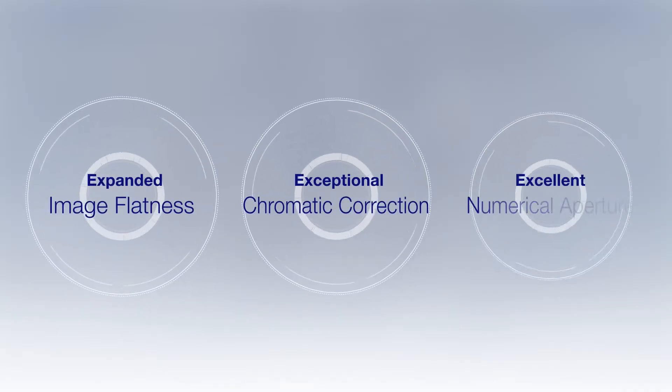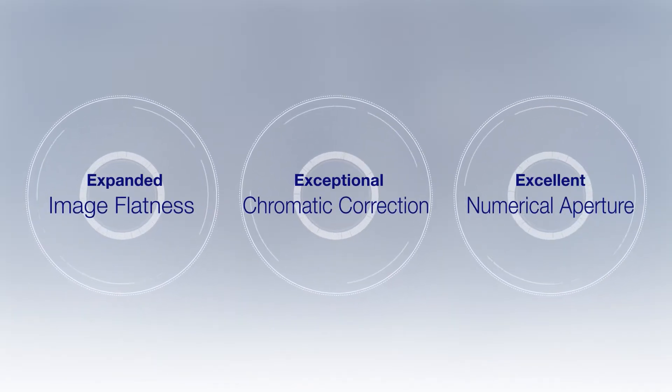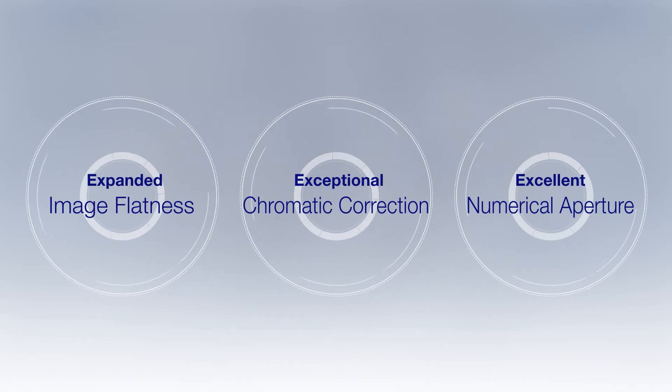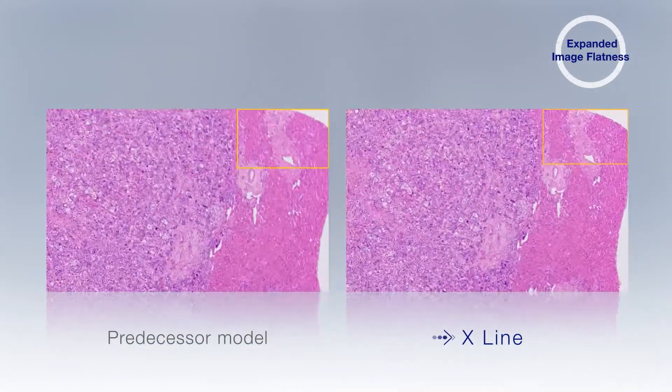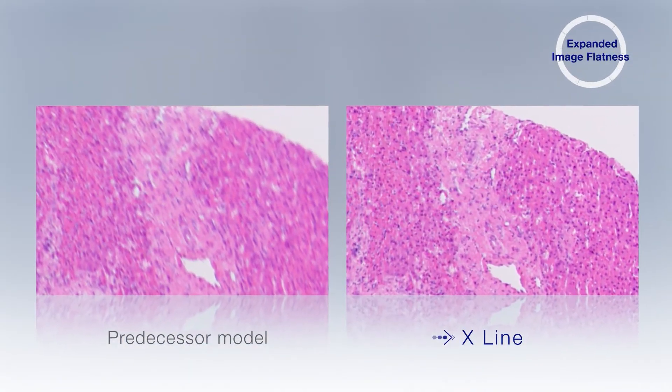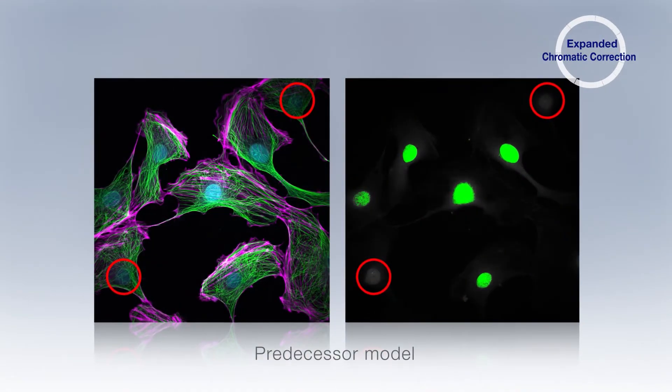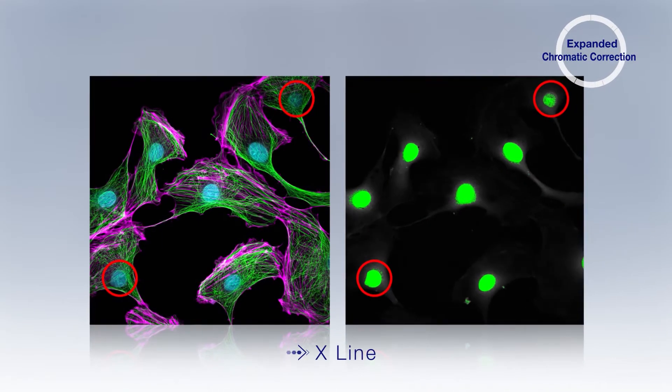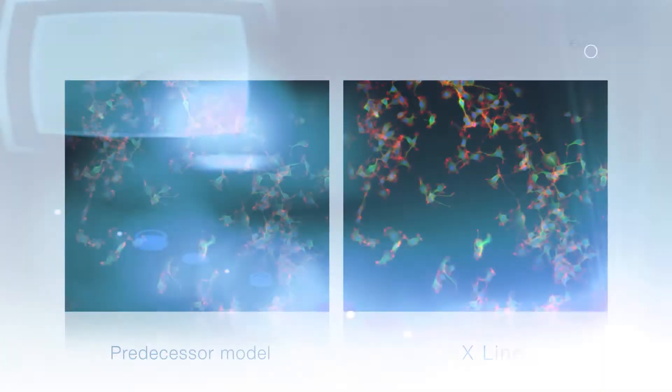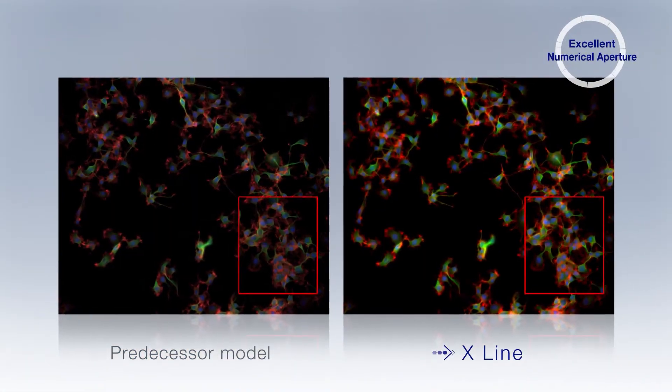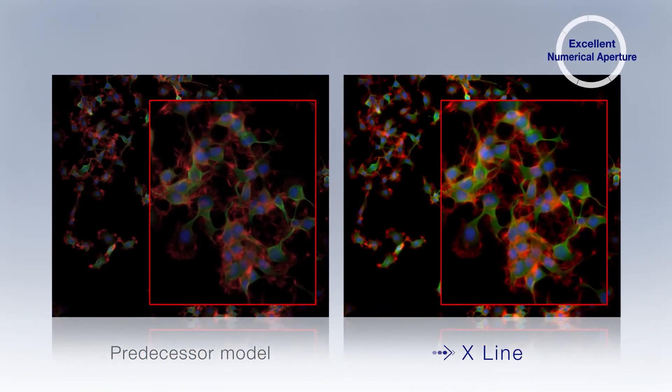These innovative ultra-thin lenses simultaneously deliver three major improvements: uniform high-quality images over a large field of view, better chromatic correction for multi-color imaging, and high-sensitivity fluorescence observation thanks to a high numerical aperture.